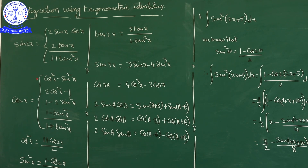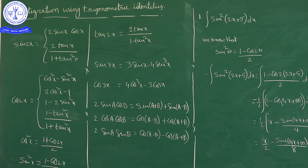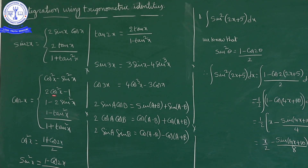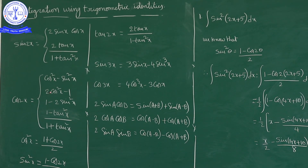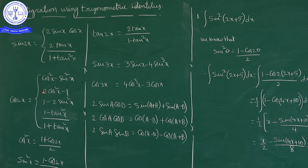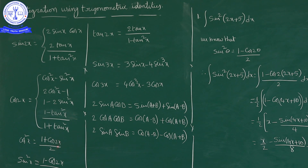Next, cos 2x. Cos 2x equals cos²x minus sin²x — that is one formula. Another formula is 2cos²x minus 1. Using this, we can also write cos²x equal to (1 + cos 2x) / 2, obtained by moving the minus 1 to the other side and dividing by 2.